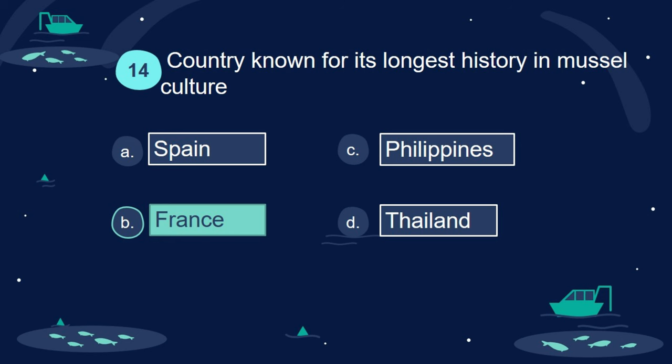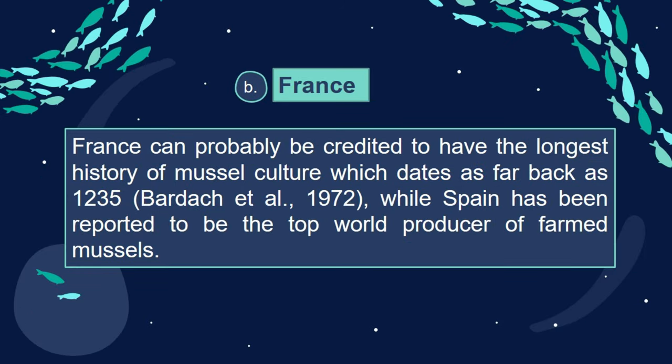Answer: B. France. France can probably be credited to have the longest history of mussel culture, which dates as far back as 1235 (Bardach et al., 1972), while Spain has been reported to be the top world producer of farmed mussels.